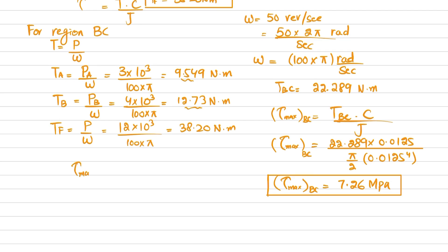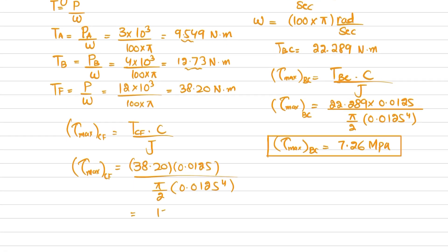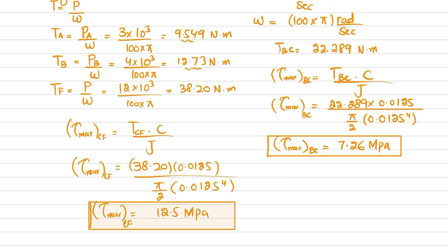Maximum shear stress in region CF equals T_CF × C divided by J. T_CF is 38.20, C is 0.0125m, and J is (π/2)×(0.0125)⁴. Calculating this gives the maximum shear stress developed in region CF equal to 12.5 MPa. These are the answers for problem 5-39.